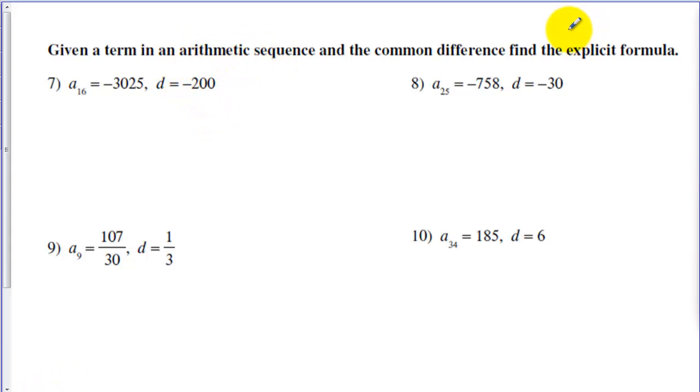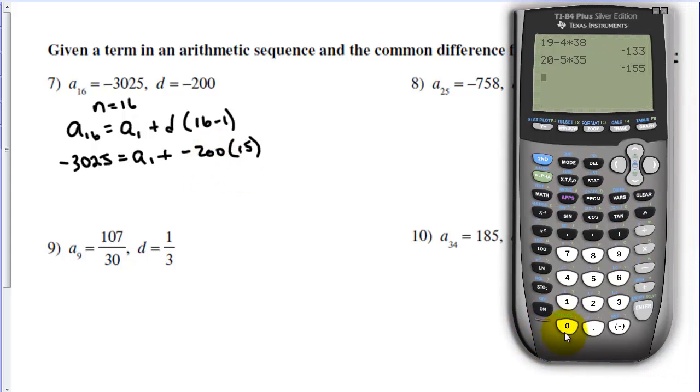This time we're given different information and we want to write the explicit formula. When n equals 16, we get that value. So a sub 16 will equal a sub 1 plus d times 16 minus 1. If we substitute in the numbers we have, we need to find the first term. We can multiply here, the 15 times the 200.